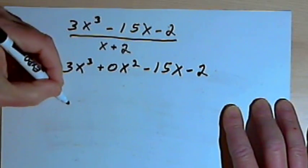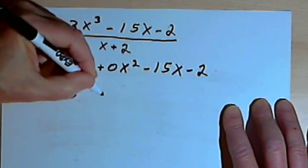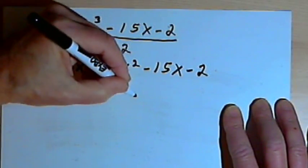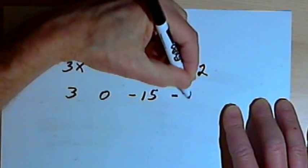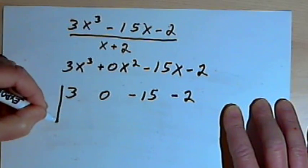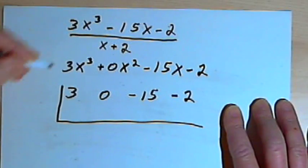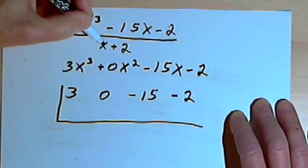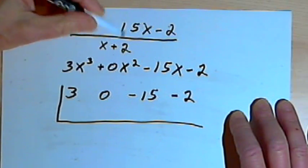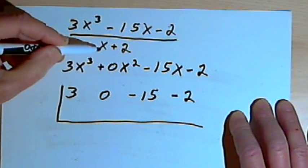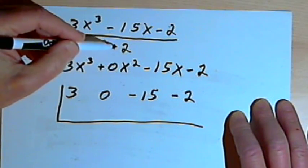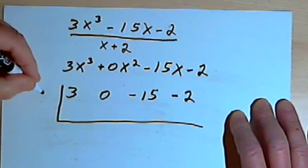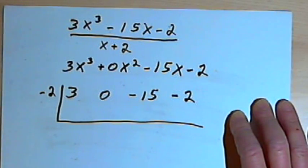Now I'll just take the coefficients. So that's 3, 0, negative 15, and negative 2. I'll put my half box around it. The divisor I have here is x plus 2. I disregard the x and take the opposite of what I've got left. Instead of positive 2, I'm going to take a negative 2.